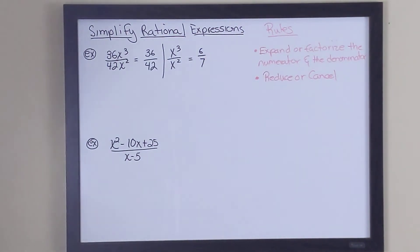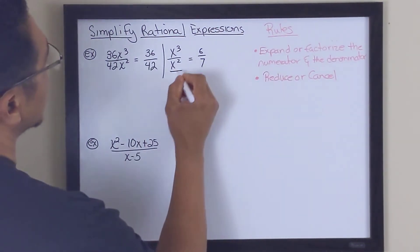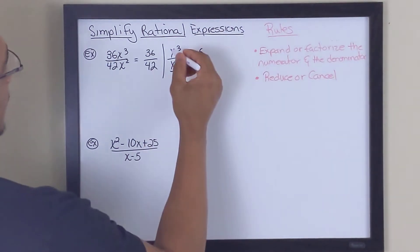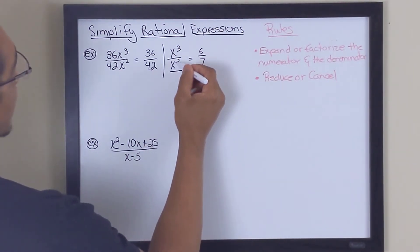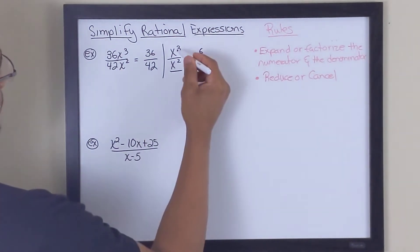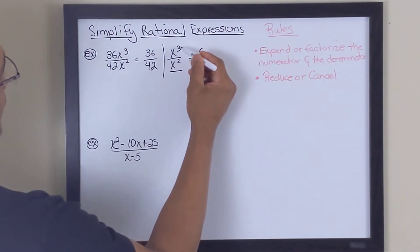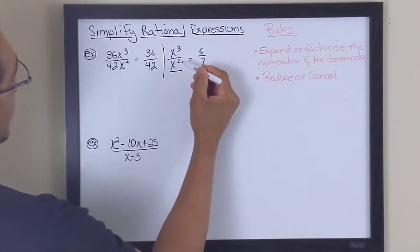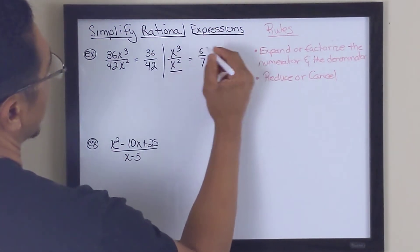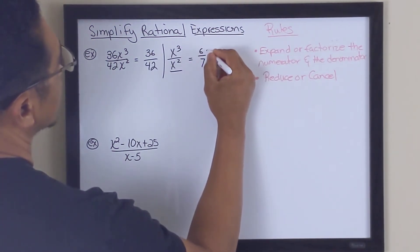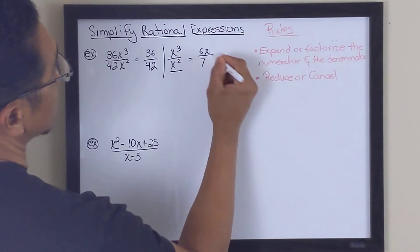Alright? And now we resolve this portion of it where we have x to the third divided by x to the second power. Whenever we have the situation where we have like bases and it's in a fraction, what we do is we subtract the power of the numerator minus the power of the denominator and we use the same base for the answer. So our answer for this portion is going to be x to the first power or just 6x.